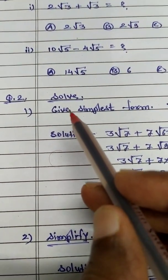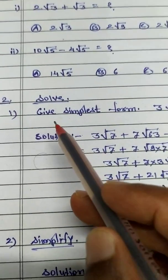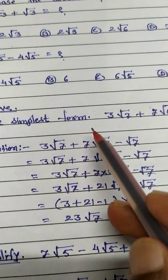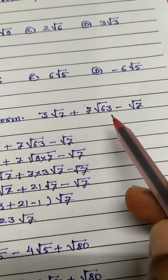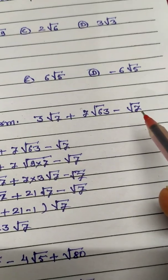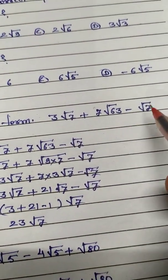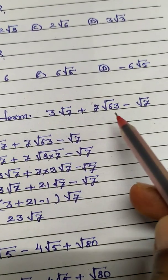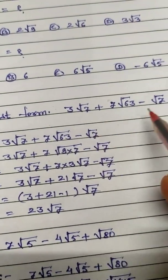Question number 2, solve first example. Give the simplest form. Example is 3 root 7 plus 3 root 63 minus root 7. In this case these two surds are like, but this is not like, so we take this in simplest form, that is to make like surd.